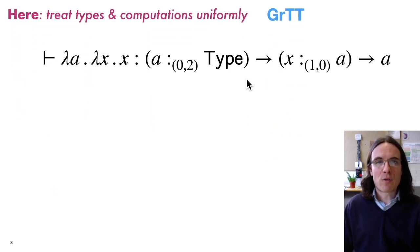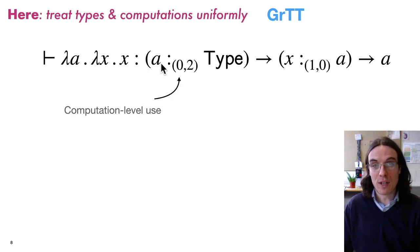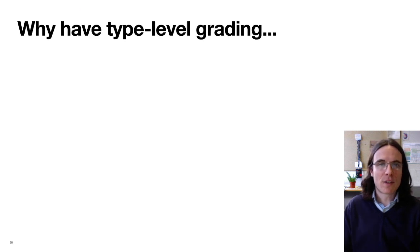So now our notion of grading is going to contain two bits of information, which explains how a value or a parameter is used computationally and how it's used at the type level. So going back to the polymorphic identity, in our system, the typing looks like this, where this bit of information here, grades are pairs. The left part explains the computational usage, which is zero for A, and the type level usage, which is two for A, because it appears twice in the rest of the type. So what is this useful for?